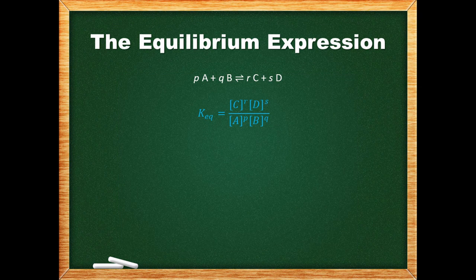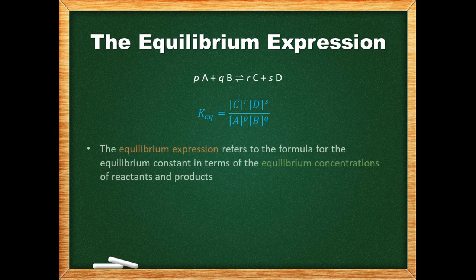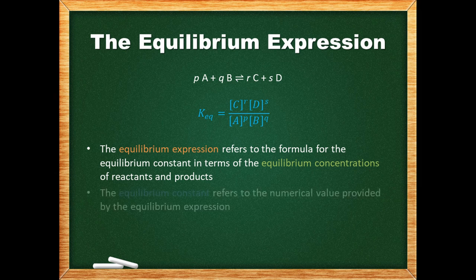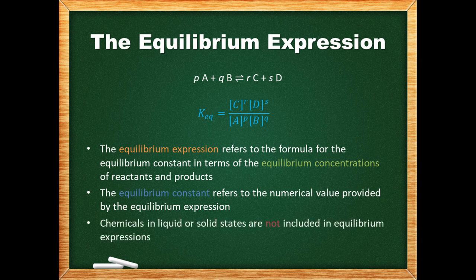The equilibrium expression is derived in the textbook, but we won't cover the derivation in detail here. In this expression, the equilibrium constant is in terms of the equilibrium concentrations of the reactants and products. The product concentrations are in the numerator, while the reactant concentrations are in the denominator. The concentrations are each raised to the power of their corresponding coefficient in the balanced chemical reaction. The equilibrium constant K_eq is the numerical value provided by this expression and is temperature dependent. Solids and liquids are not included in the equilibrium expression.